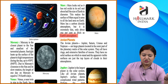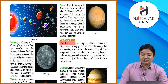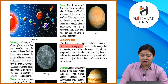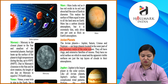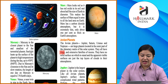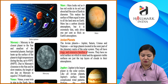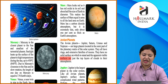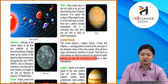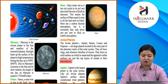The Jovian planets — Jupiter, Saturn, Uranus, and Neptune — are large planets located in the outer part of the solar system. They all have rings and extensive families of moons. They have no solid surface on which to stand; the apparent visible surfaces are just the top layer of clouds in their atmospheres.